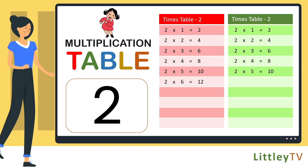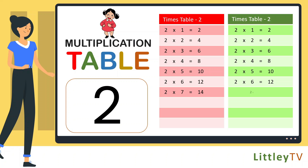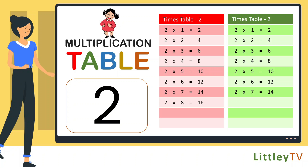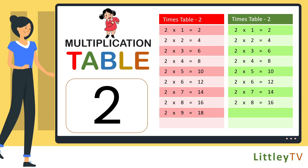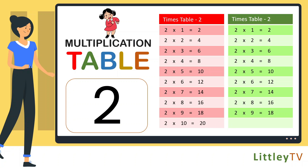2 sixes are 12, 2 sevens are 14, 2 eights are 16, 2 nines are 18, 2 tens are 20.